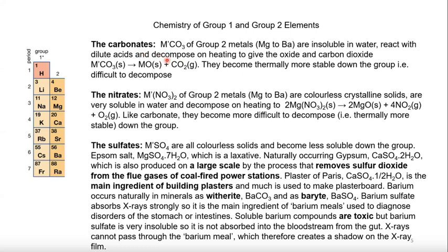The carbonates of group two elements from magnesium to barium are insoluble in water but soluble in dilute acid. They decompose on heating, giving metal oxides and carbon dioxide. The nitrates are colorless crystalline solids and decompose to give metal oxide, nitrogen dioxide, and oxygen.